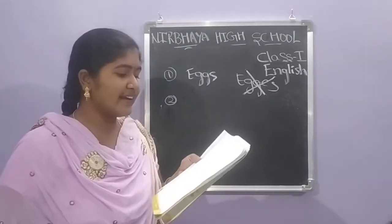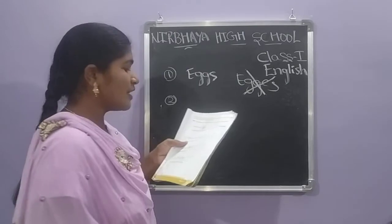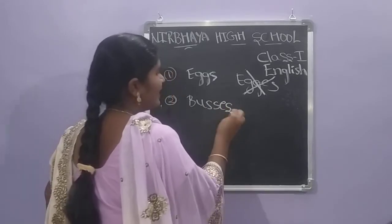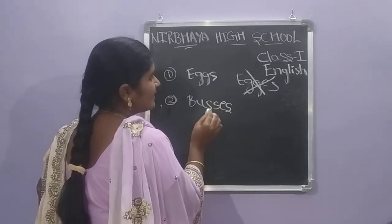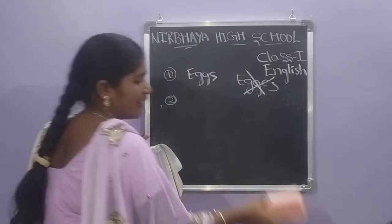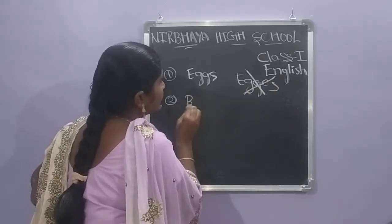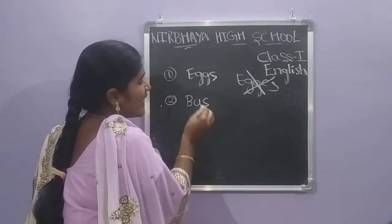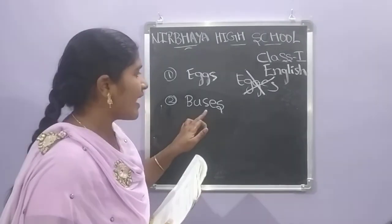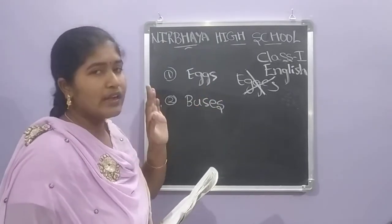Second one: There was a line of red buses outside my house. Buses or bus? We say 'buses' — why? The word ends with the letter S, so we are adding ES. When the word ends with S, O, or X, we are adding ES. Otherwise, we are adding only S.